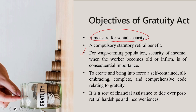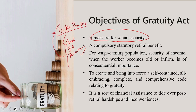The provisions of social security measures — retiral benefits like gratuity, provident fund, and pension — are known as triple benefits. The legislative intent behind bringing this act was not only to achieve uniformity and a reasonable degree of certainty, but also to create and bring into force a self-contained, all-embracing, complete, and comprehensive code relating to gratuity.